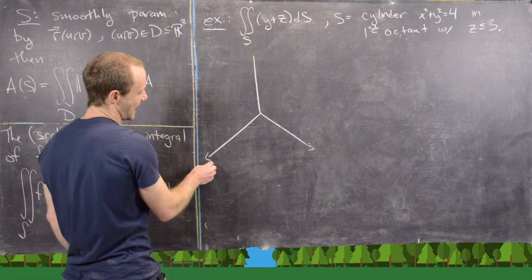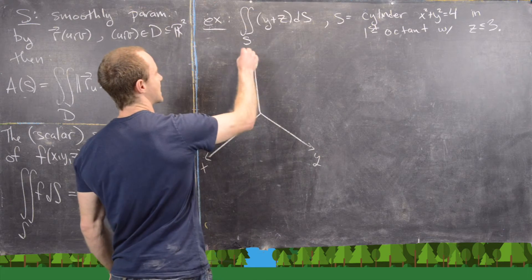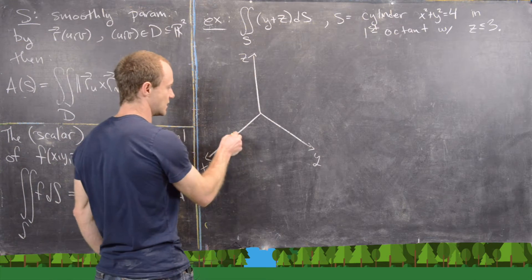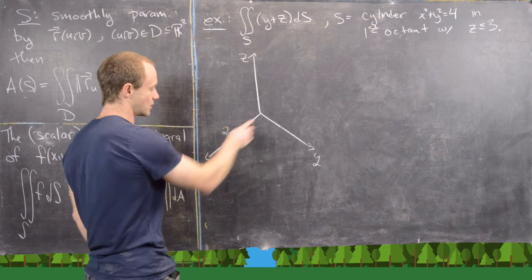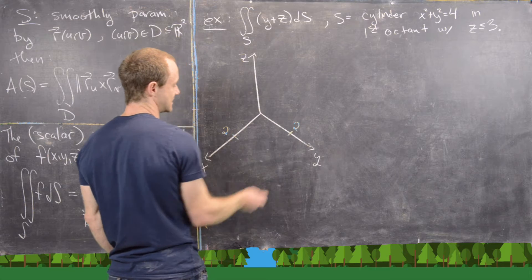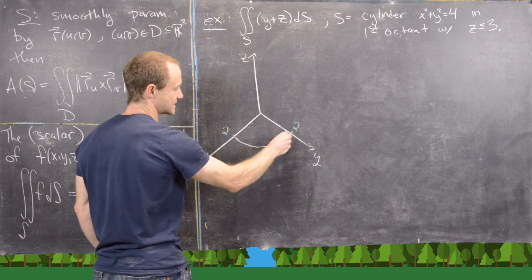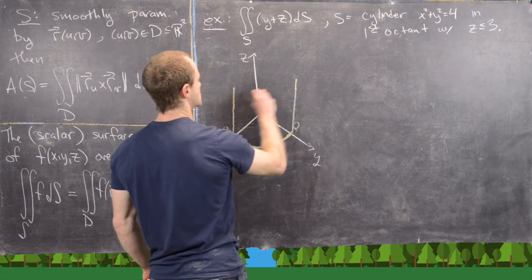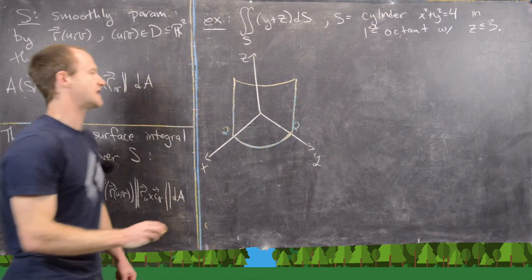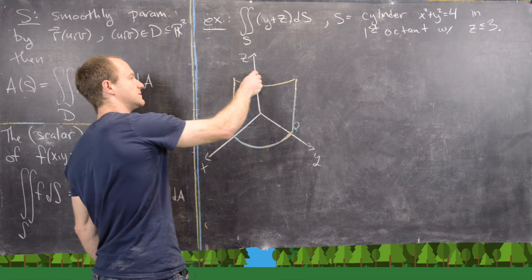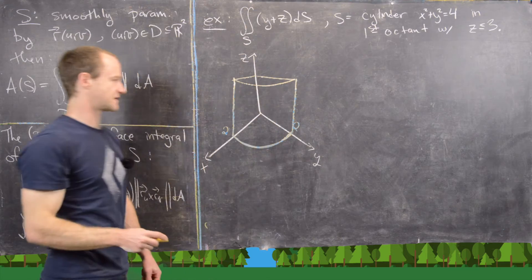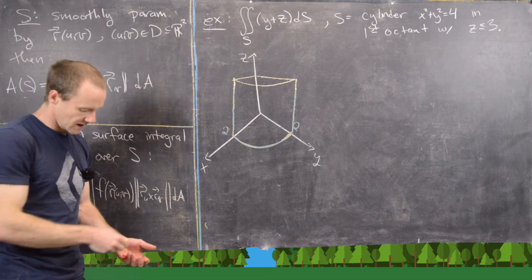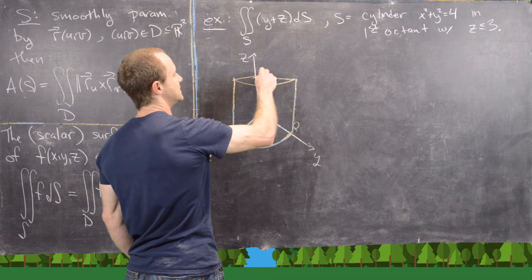Here we have our x-axis coming out, our y-axis coming out, and our z-axis going up. The cylinder in the first octant has radius 2, so it goes through the x-axis at 2, through the y-axis at positive 2, making a quarter circle. It goes straight up and gives us that picture — just a quarter of a cylinder. The top point is at z = 3.